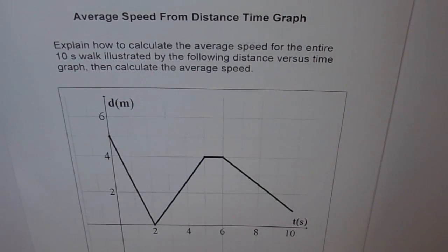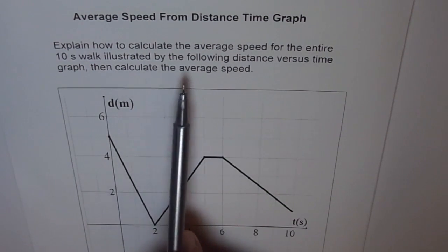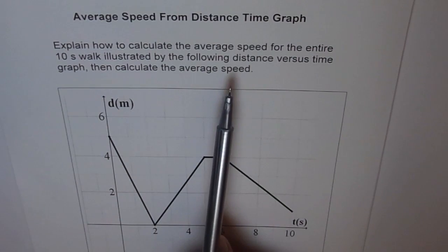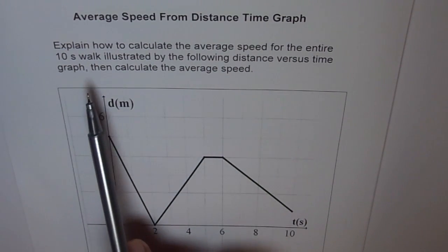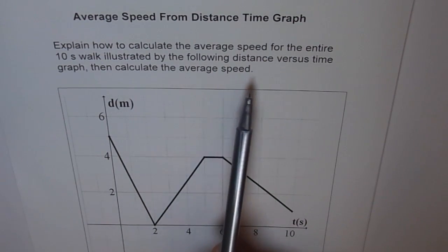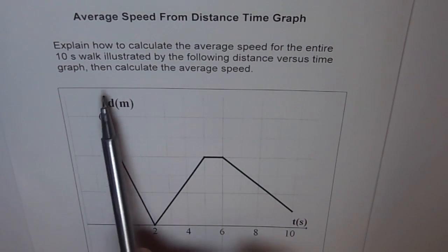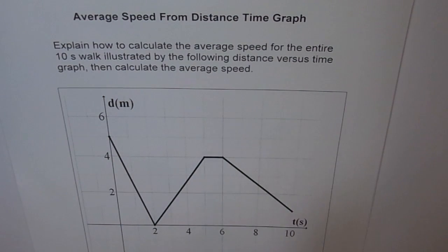Average speed from a distance-time graph — this is not as easy a problem as it seems. The question asks: explain how to calculate the average speed for the entire 10-second walk, as illustrated by the following distance versus time graph, then calculate the average speed.